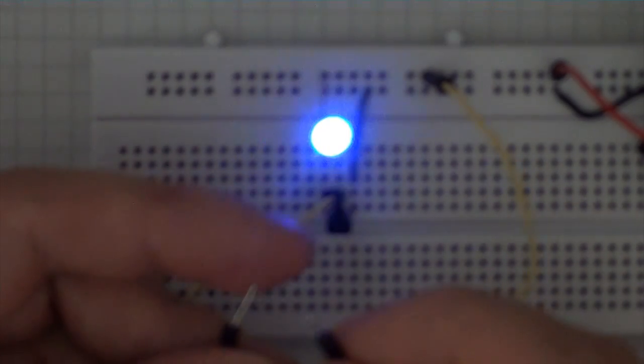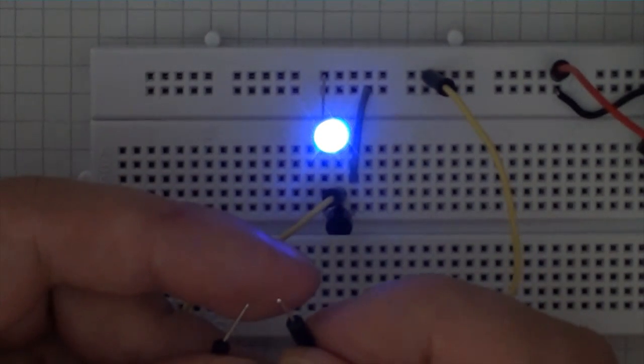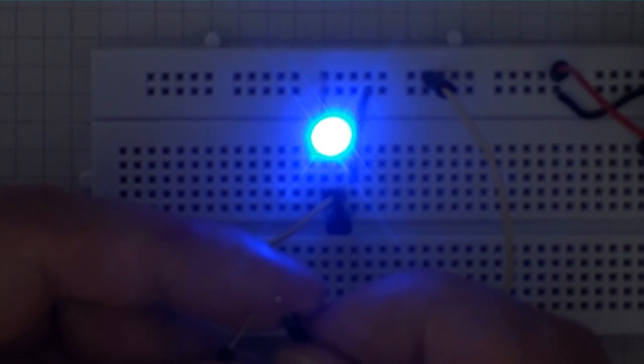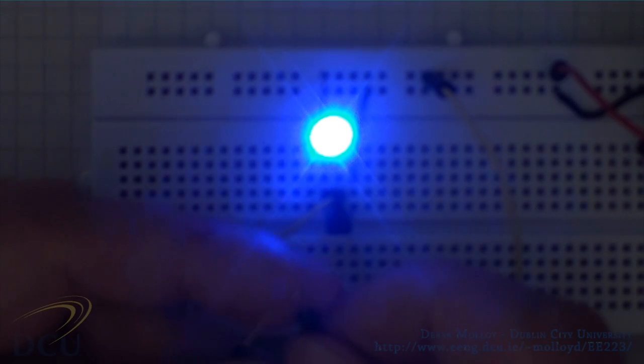It looks very, very bright on the camera, and that's because it's shining directly into the camera. If you were to do this yourself, you'd see that it's only at about half the normal illumination you would expect from this LED, so we're not in danger of burning out the LED here.